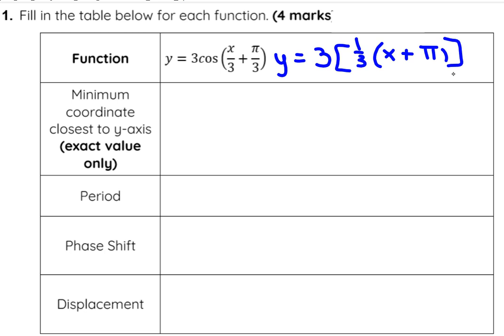There it is factored out. I can always put it back in to check. One third of x is x over 3, and one third of pi is pi over 3. So yes, I did that correctly.